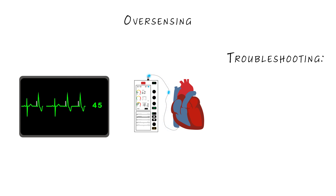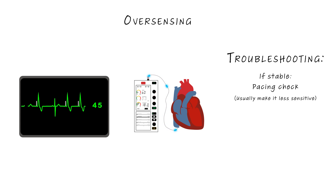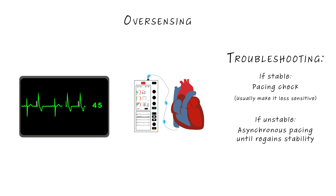When troubleshooting over-sensing, if the patient is stable, perform a pacing check and set the sensitivity appropriately — that is, make it less sensitive. If the patient is unstable, switch to an asynchronous mode, which will disable sensing and ensure the patient gets paced. Then perform a pacing check once the patient is stable.